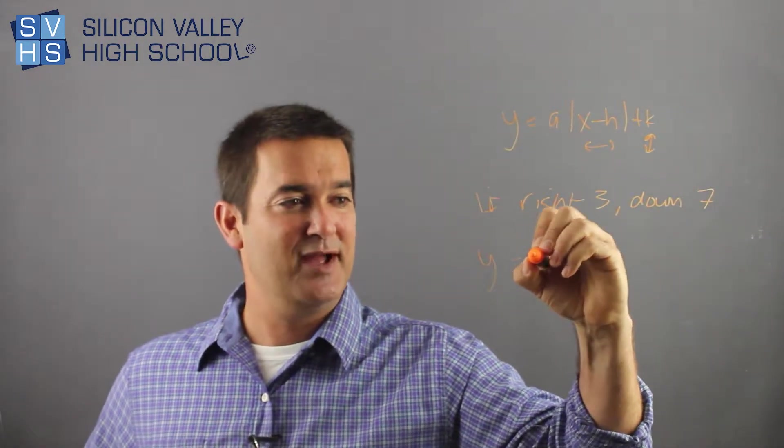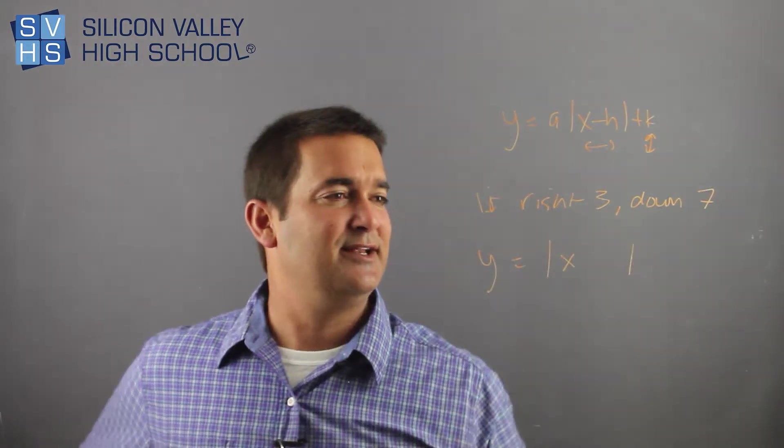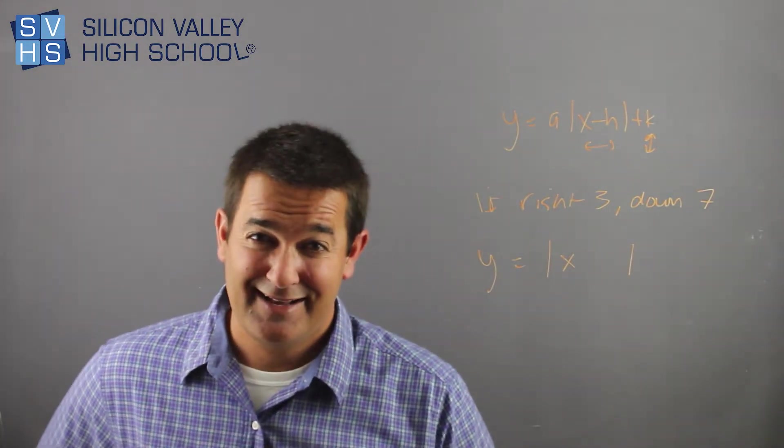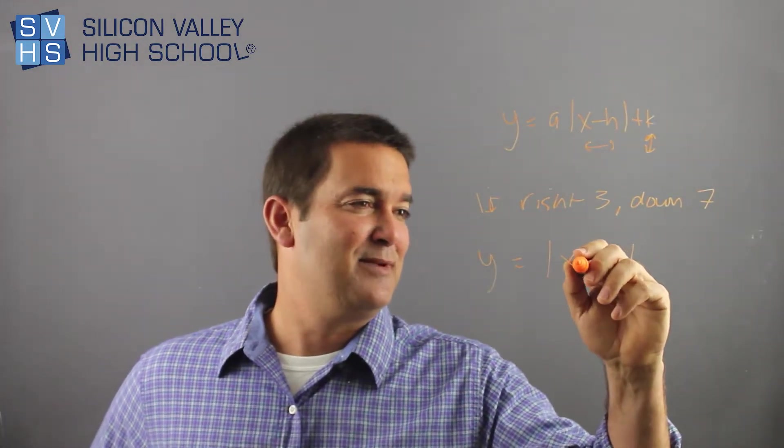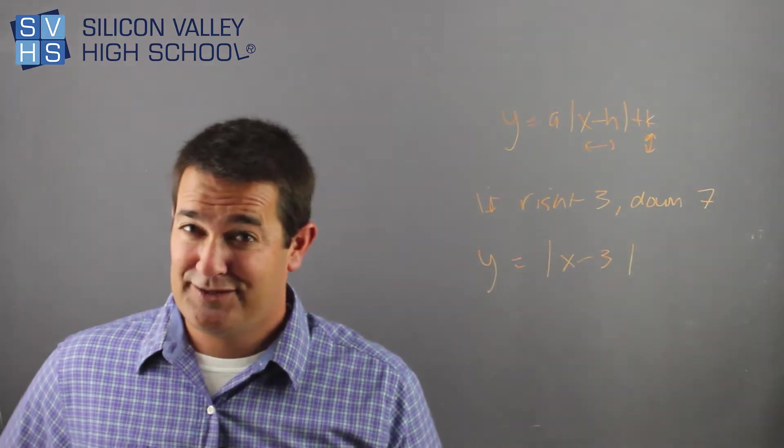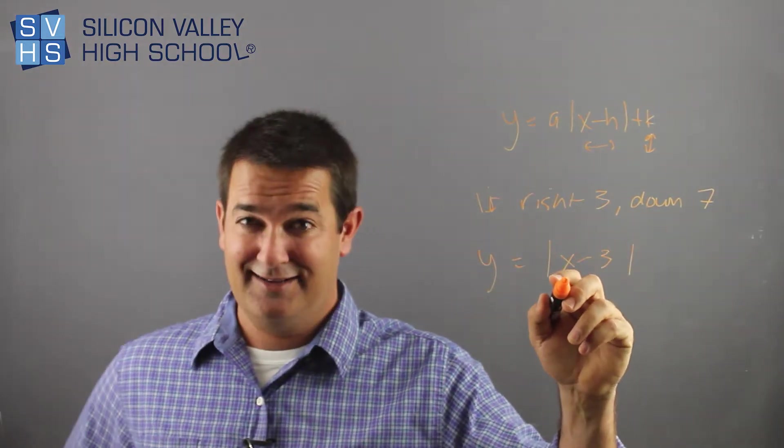You would put your little generic thing right here like this and you go, hmm, okay. So it goes right 3. It's definitely going to be minus 3, which again is counterintuitive. That looks like it's left 3. It's not. That's correct. Right 3.